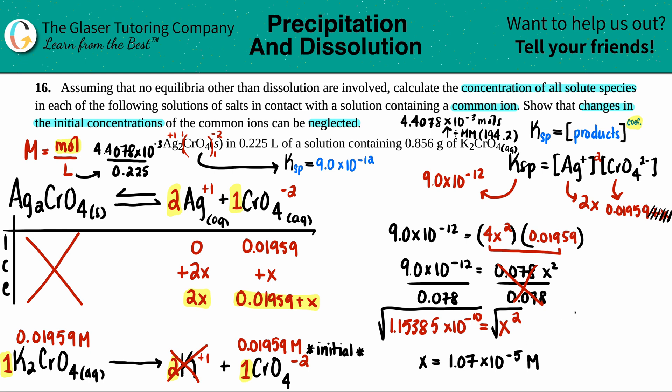To see if we can neglect it, we do the 5% rule. Take your x value and divide it by your initial concentration, 0.01959, and times it by 100. If this is 5% or less, we assumed correctly. If it's over 5%, we have to go back and keep that plus x and use the quadratic equation. 1.07 times 10 to the negative 5th divided by 0.01959 times 100: we don't even get 1%, so this clears the 5% rule.